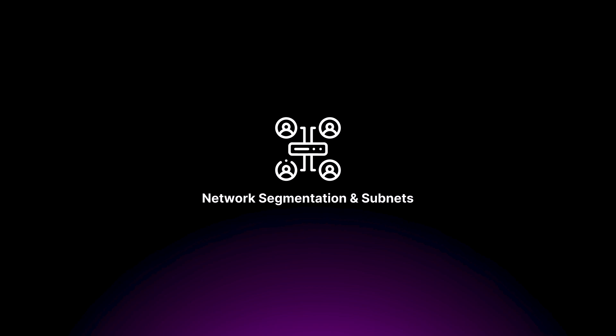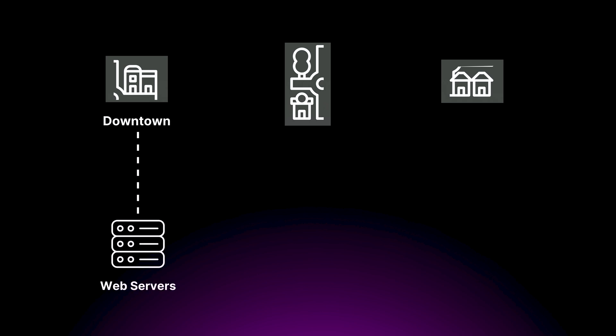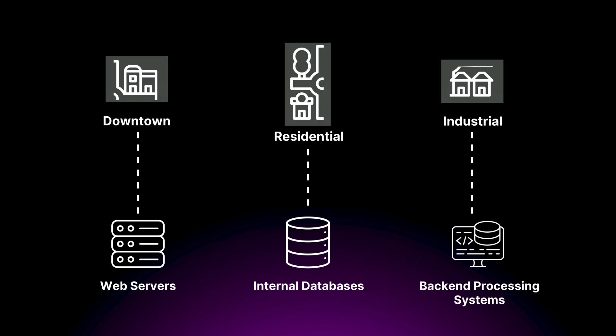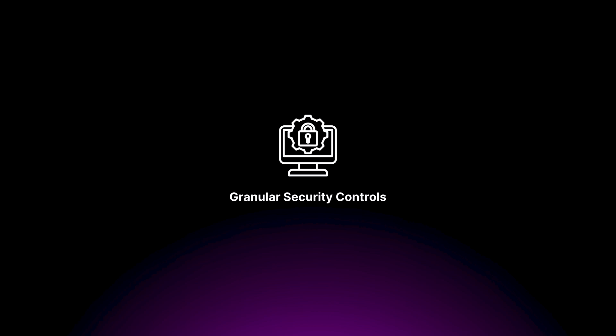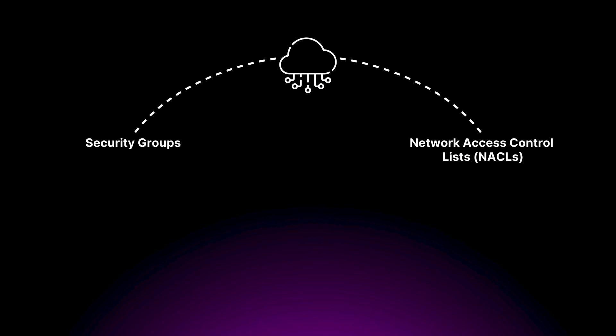Just like a gated community, you need to carefully plan your entry and exit points as well as your internal security measures. When setting up your VPC, you should implement network segmentation and subnets. This is like dividing your city into different districts, each with its own security requirements — a downtown subnet for your public-facing web services, a residential subnet for your internal databases, and an industrial subnet for your backend processing systems. By segmenting your network, you can apply granular security controls to each subnet.